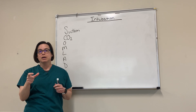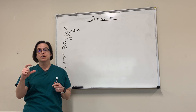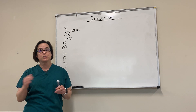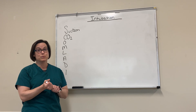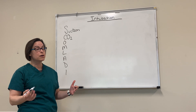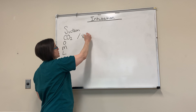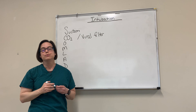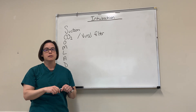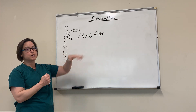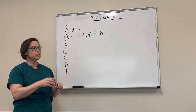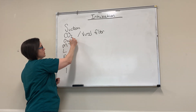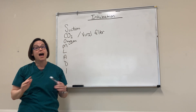The next thing is a CO2 detector — whether that's a colorimetric one that changes color or capnography, it doesn't matter as long as you have some way to detect CO2. I also want you to have a viral filter. I'm putting those together because those are two things we think about putting right on the tube as we're getting going. Don't forget about a viral filter both for pre-intubation and as you're getting ready.